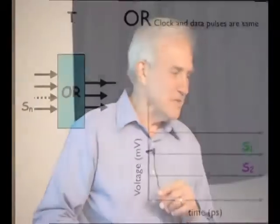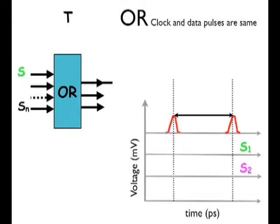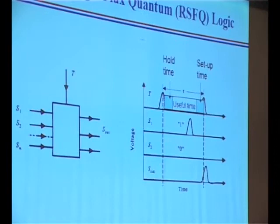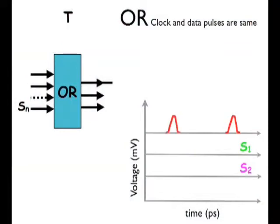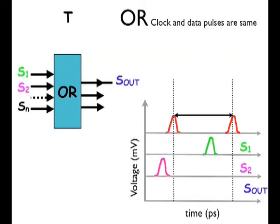Imagine you have all these single flux quantum pulses running through your circuit. If these pulses are only a picosecond long, how can you get them into the circuit so they interact with each other? Of course, that's not the way it works. This is an OR gate with several possible inputs, and there is a timing or clock pulse that comes in at the clock period. If one of these pulses comes in any time during that clock period, that is considered a one entering the circuit. If nothing comes in on S2, that is considered a zero. So you put in ones and zeros, and as an OR gate, you get an output.